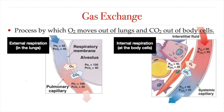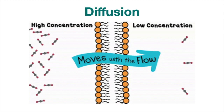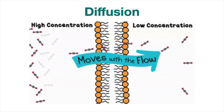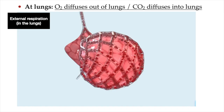This exchange of gases happens through a process called simple diffusion. Diffusion is a process in which transport is driven by a concentration gradient. That means that molecules will move across a membrane from an area where they are in higher concentration to an area where they are in lower concentration. At the lungs, gas exchange through diffusion takes place between the millions of tiny air sacs called alveoli and the capillaries that surround them.